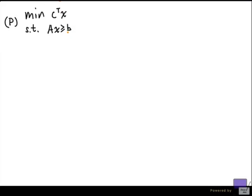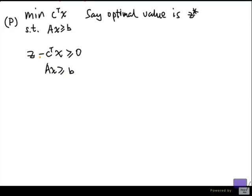And suppose that this has an optimal value, say optimal value is z star. Now we have seen that solving p is the same as finding among all solutions to the following system, one that has the minimum z value. And we have seen in a previous video that we can solve this using Fourier-Motzkin elimination to eliminate all the variables other than z.